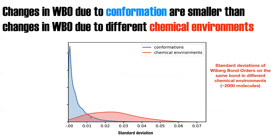Looking at the distribution of standard deviations for this set, the standard deviation is a lot bigger than what you see from conformation alone. What this tells us is that yes, we could use changes in the Wiberg bond order as an indicator that the chemical environment has changed — because the changes that happen from changing chemical environment are statistically bigger than the changes that happen with conformation.